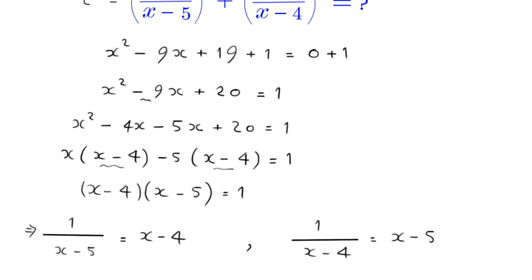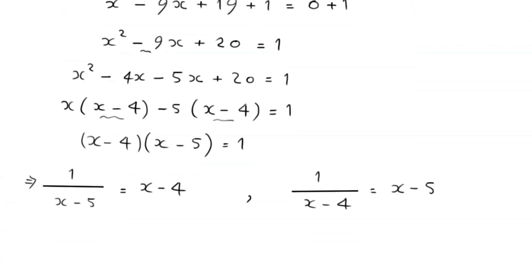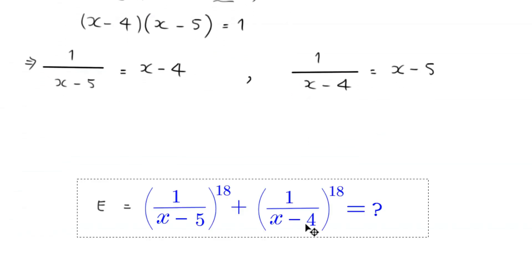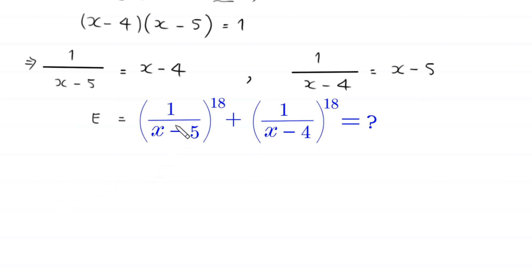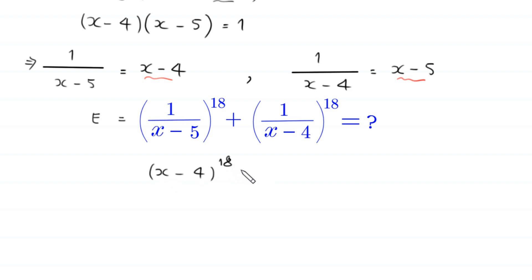We have to find the value of the expression 1 over (x minus 5) to the power 18 plus 1 over (x minus 4) to the power 18. We replace 1 over (x minus 5) with x minus 4 and replace 1 over (x minus 4) with x minus 5. This becomes (x minus 4) to the power 18 plus (x minus 5) to the power 18.